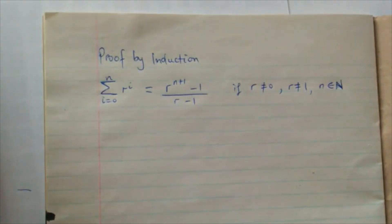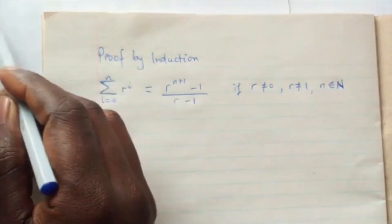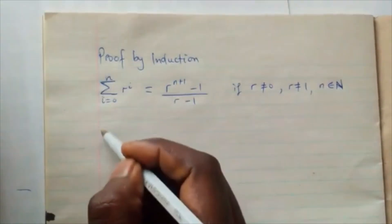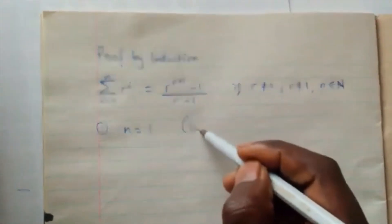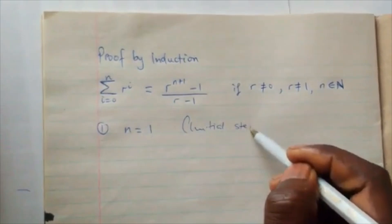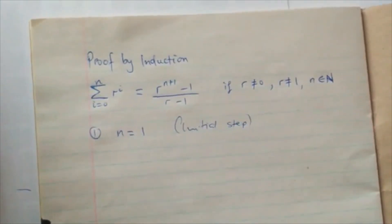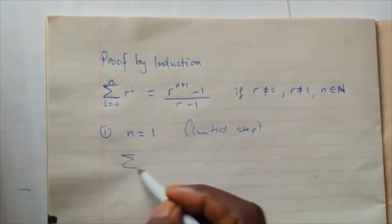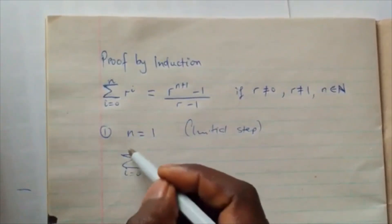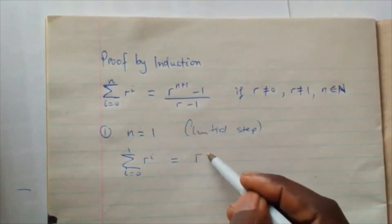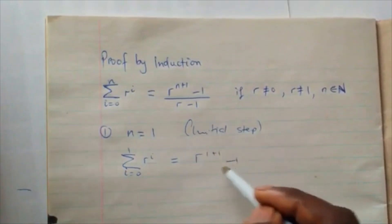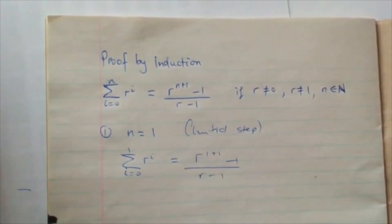When proving by induction, we begin with our first stage. The first stage is we prove for n equals one. This is the initial step of our proof by induction. So for n equals one, we have the summation from i equals zero to one of r^i, which equals r^(1+1) minus one, all over r minus one.